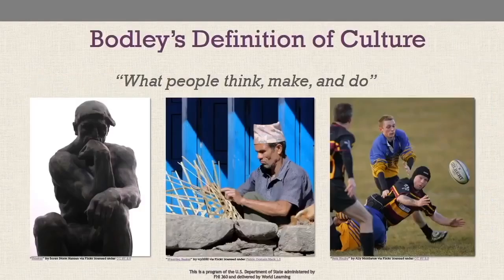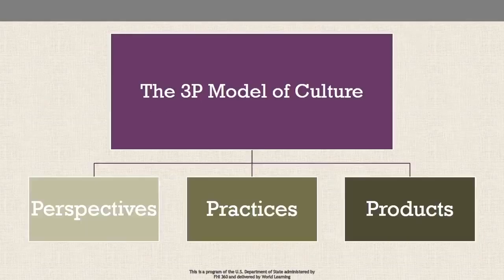Anthropologist John H. Bodley defined culture as what people think, make, and do. This broad definition has been developed in further detail by what is called the 3P model of culture. The 3Ps are perspectives, practices, and products. Let us look at each of these.